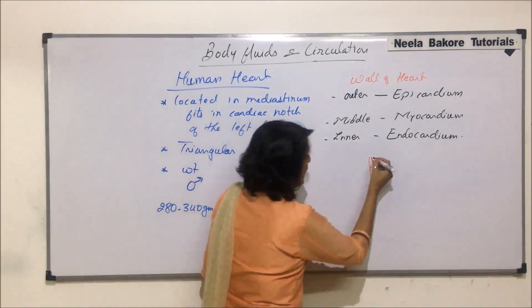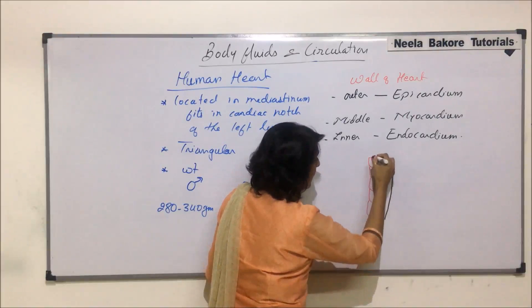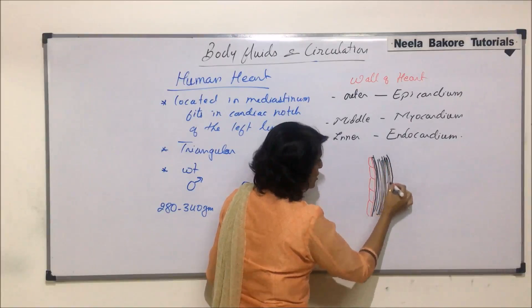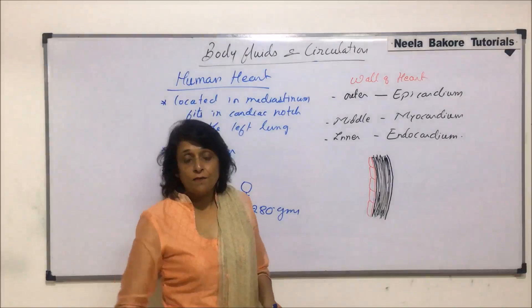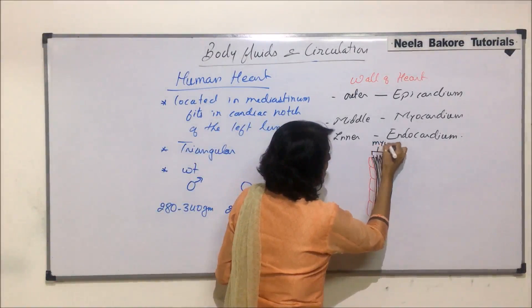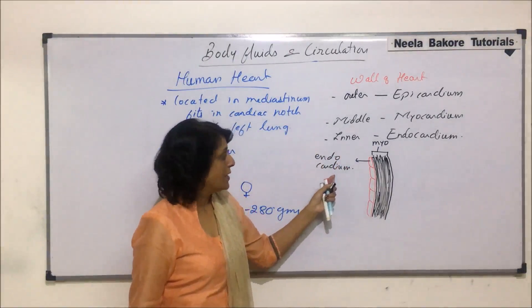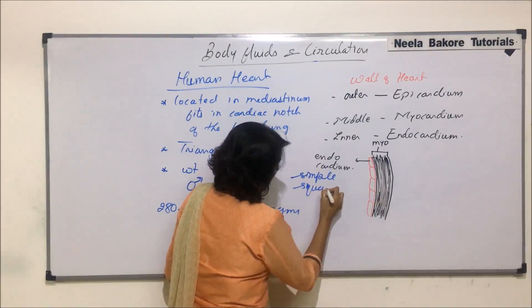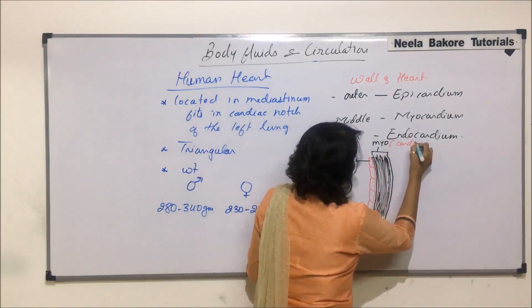The middle layer is the myocardium, which is made up of cardiac muscles. This is the thickest layer of the heart. Cardiac muscles are highly specialized muscles designed for continuous, rhythmic contraction of the heart.